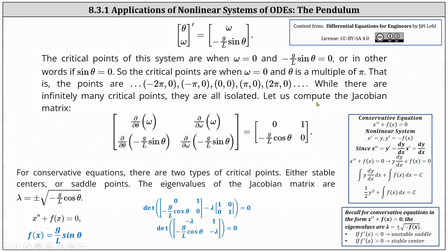Next, we determine the Jacobian matrix. In the first row, we have the partial of omega with respect to theta, which is zero, and then the partial of omega with respect to omega, which is one. In the second row, we have the partial of negative g divided by l sine theta with respect to theta, which is negative g divided by l cosine theta, and then the partial of negative g divided by l sine theta with respect to omega, which is zero.